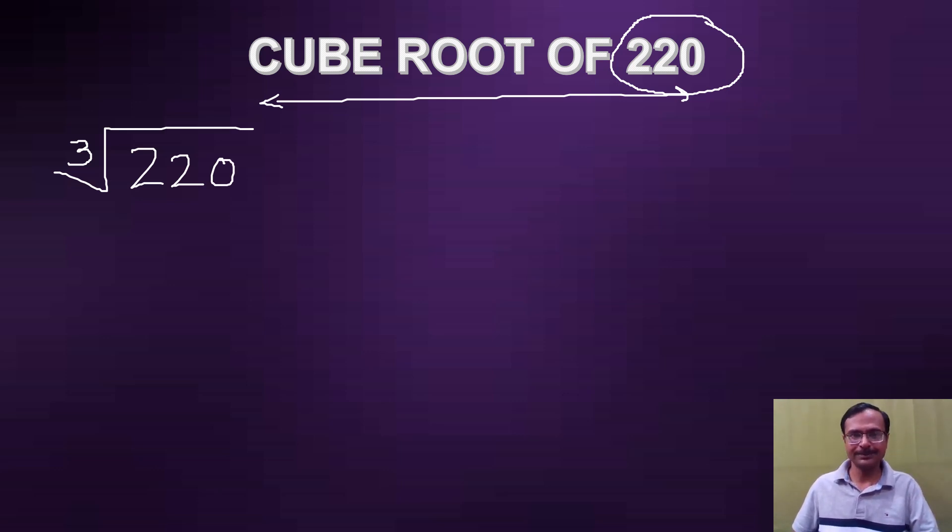Watch: 220 is very close to 216, and you understand why I'm talking about that number, because 6 cube is 216. It's a perfect cube number. So write 220 as 216 plus 4.